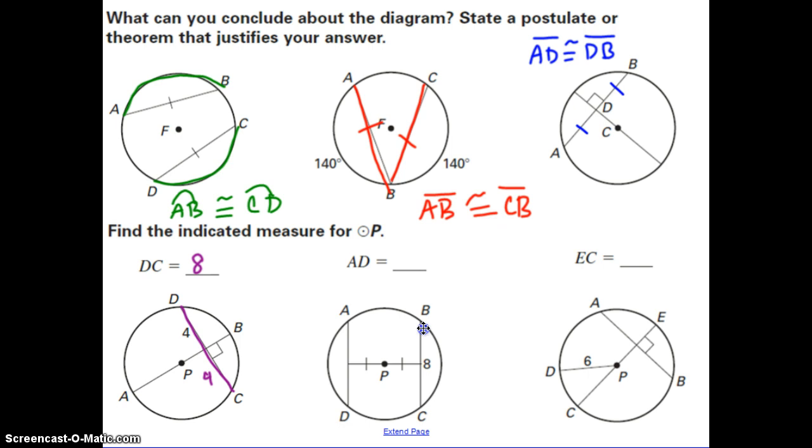Here, we want to find the length of AD. Now this uses that theorem that talks about the distance the chord is away from the center. So if this distance is congruent to this one, that means this chord is going to be congruent to this one. So this is also 8.